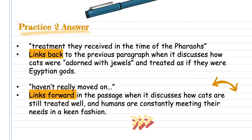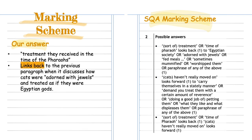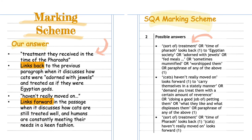Now we look at the SQA marking scheme for practice two. Our first two bullet points — 'the treatment they received in the time of the pharaohs' — I look into the marking scheme and see it's the first bullet point there; I've indicated that. I say it links back to the previous passage when it discusses how they were adorned with jewels — I'm happy I received that mark. Our third bullet point — 'they haven't really moved on' — I look for that in the answer scheme, find it links forward, and I've glossed it by saying cats are still treated well and humans constantly meet their needs. Two out of two marks. Well done if you also got full marks.